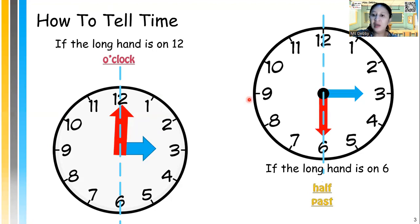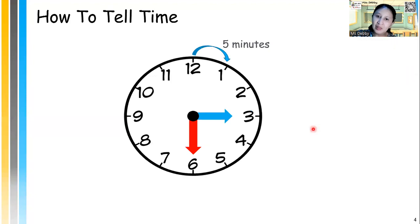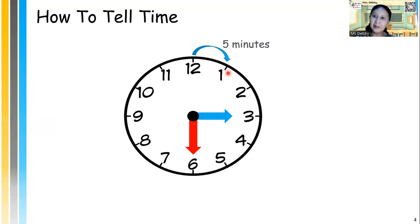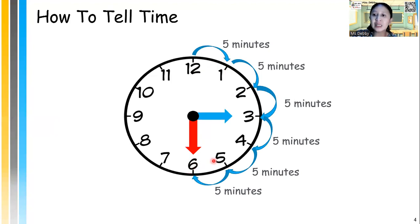When the long hand points at number 6, it's half past. Half past means 30 minutes past. On the clock, between the numbers there are always 5 minutes. So from 12 to 1 is 5 minutes, then to number 2 is 5 more, and so on — at number 6, the total is 30 minutes.